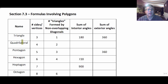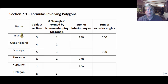You will have to memorize the names and the number of sides and vertices of the items in this particular table, but the rest of it you won't have to memorize. So we've got some columns here: the name of each, the number of sides and vertices in each polygon, the number of triangles that can be formed by non-overlapping diagonals, the sum of the interior angles of that polygon, and the sum of the exterior angles.